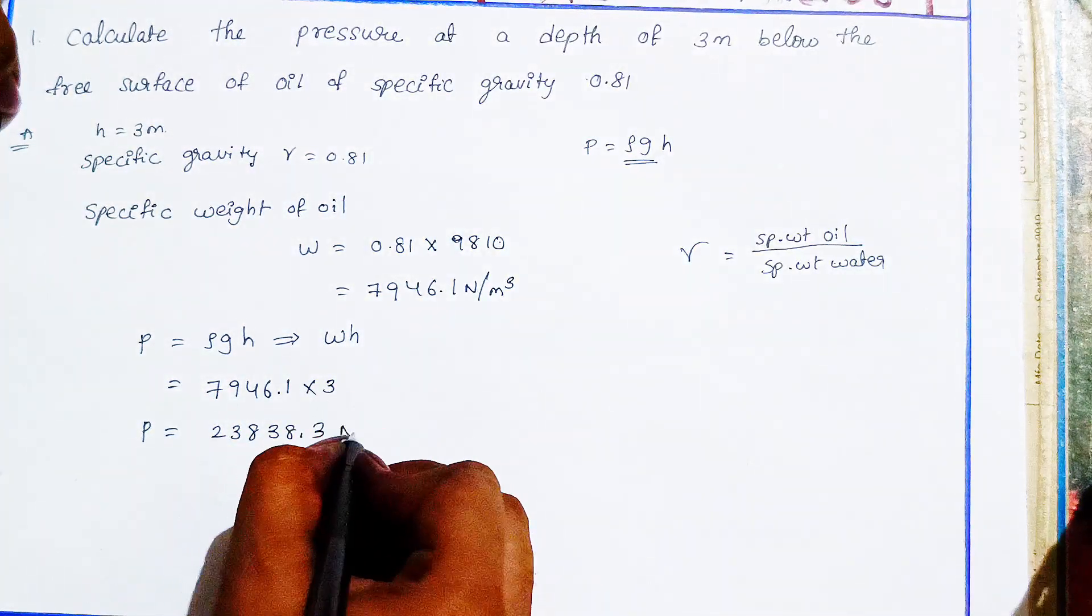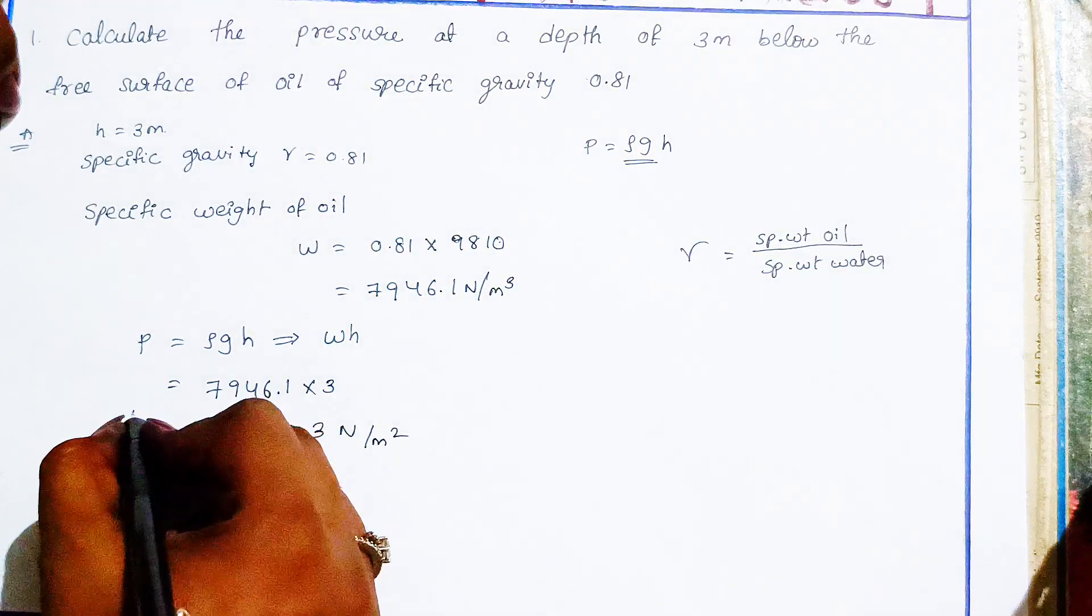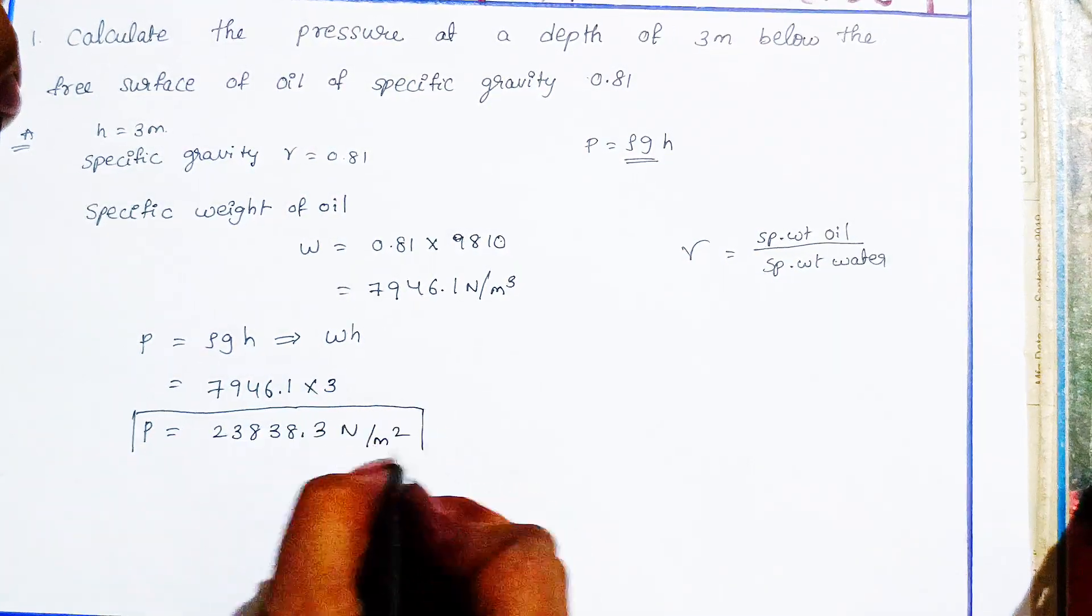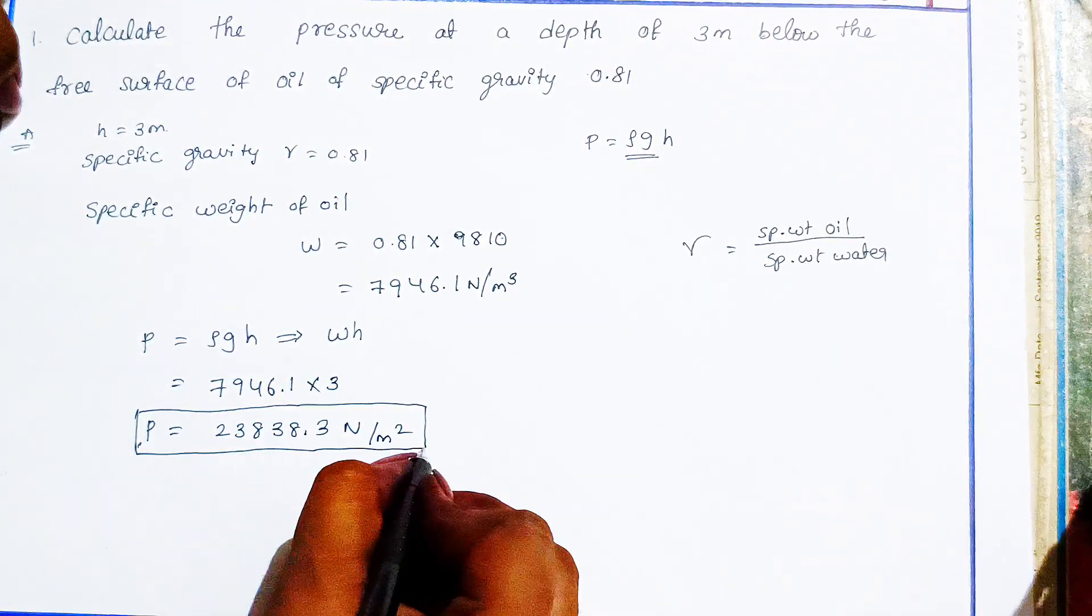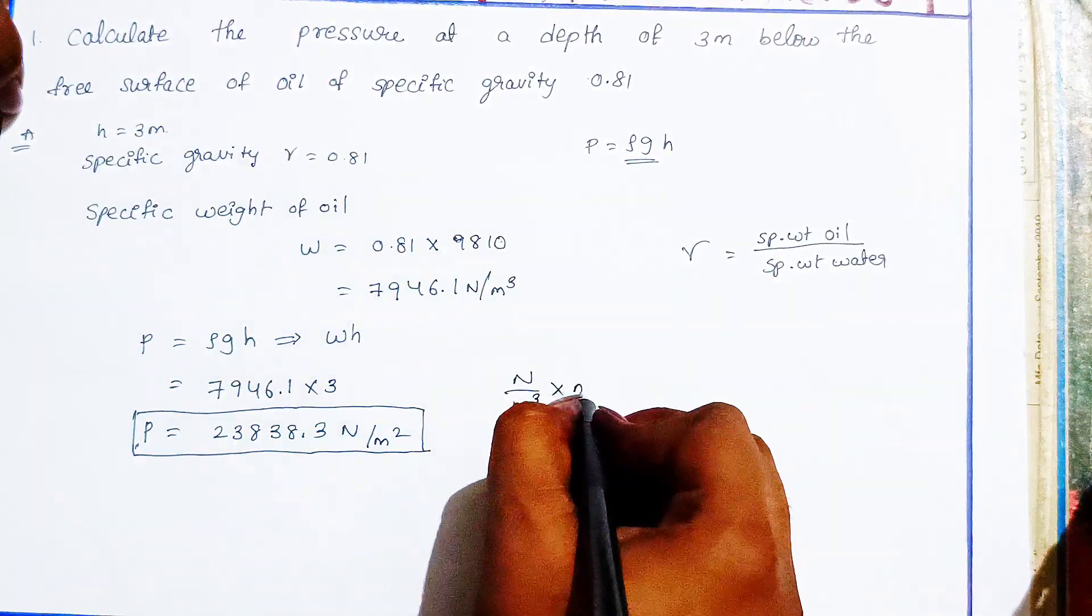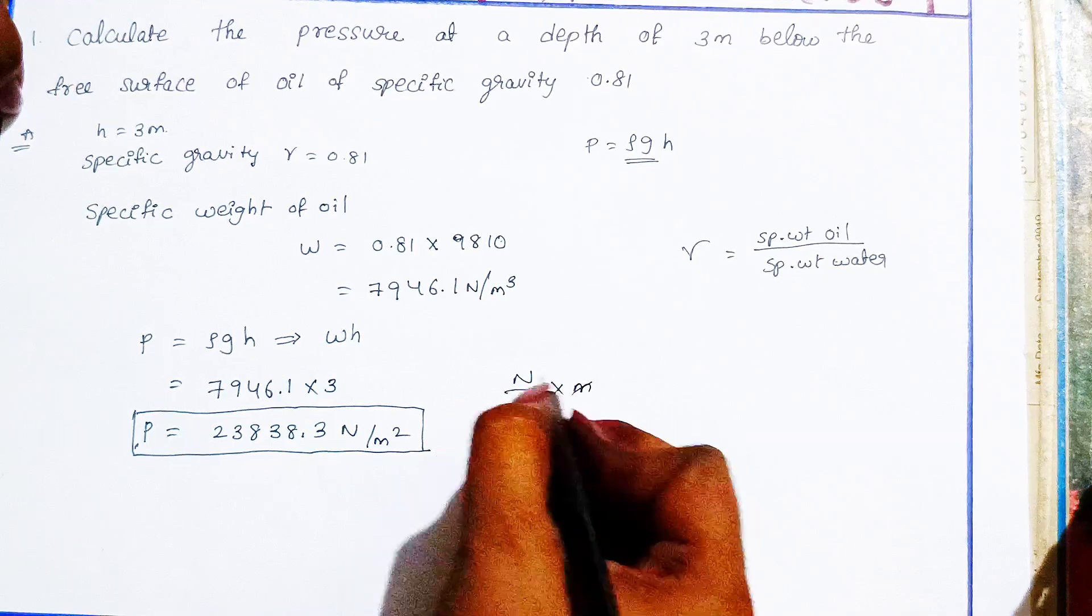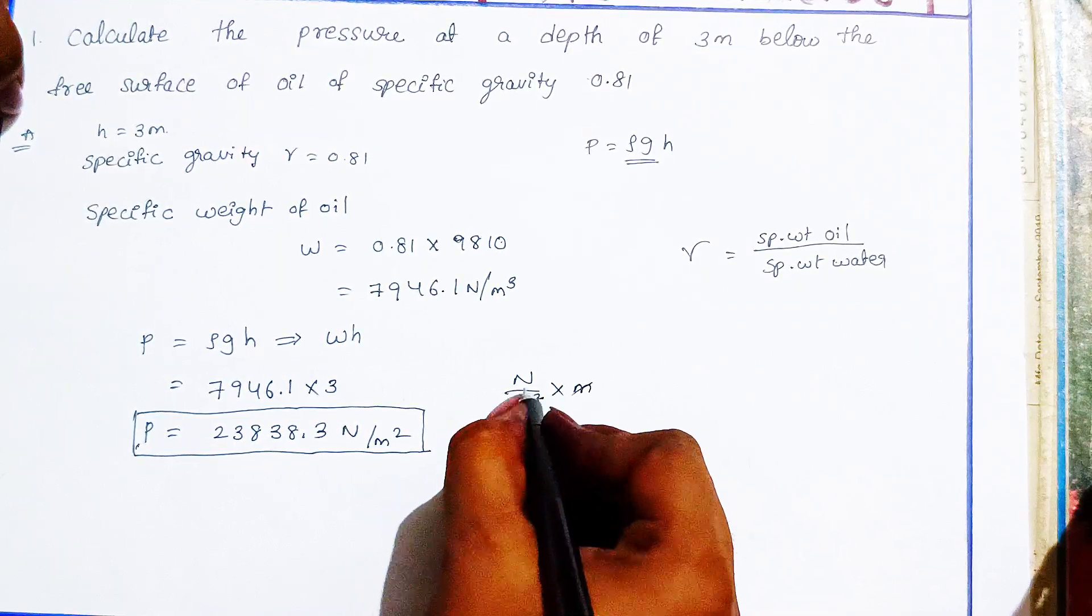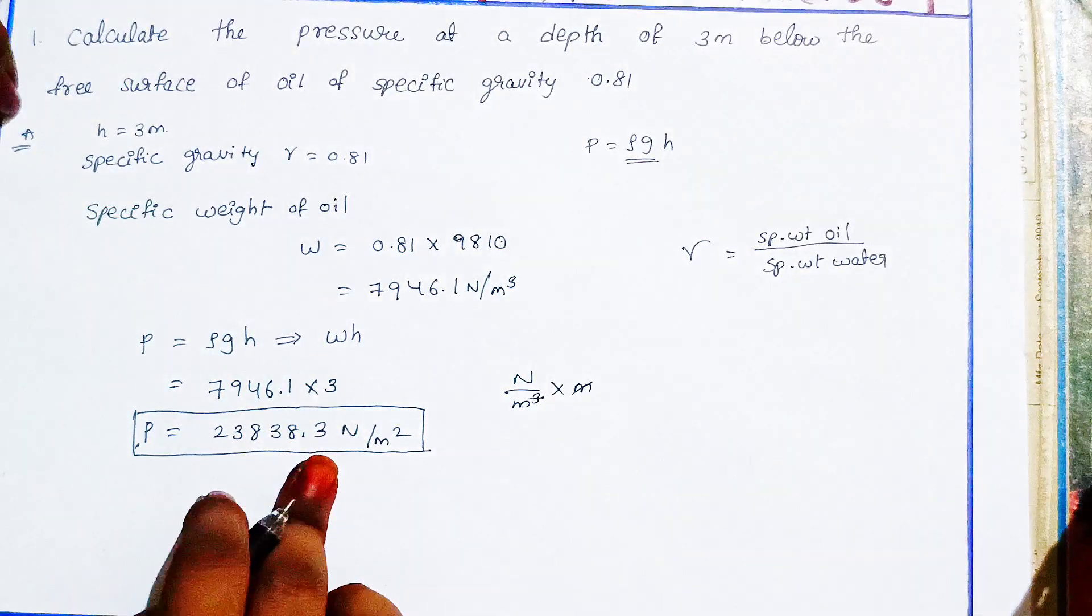The units are Newtons per square meter, from specific weight (N/m³) multiplied by meters.